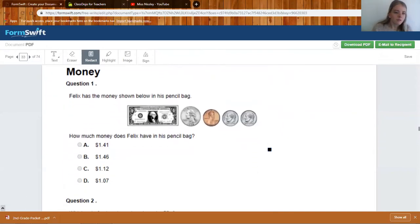Question one. Felix has the money shown below in his pencil bag. How much money does Felix have in his pencil bag? If you were to add these all together, you know this is $1. Now we have 25 cents, 26 cents, 36 cents, 46 cents. $1 and 46 cents.